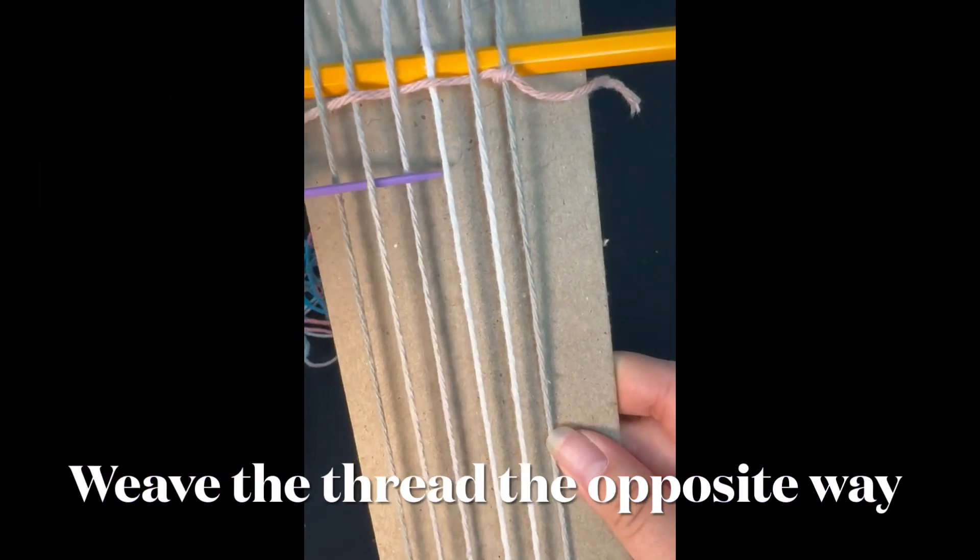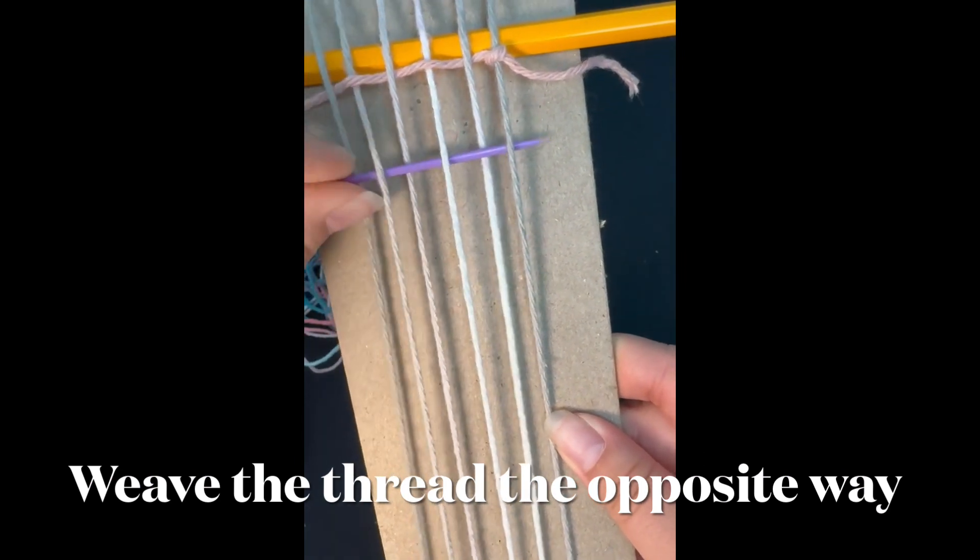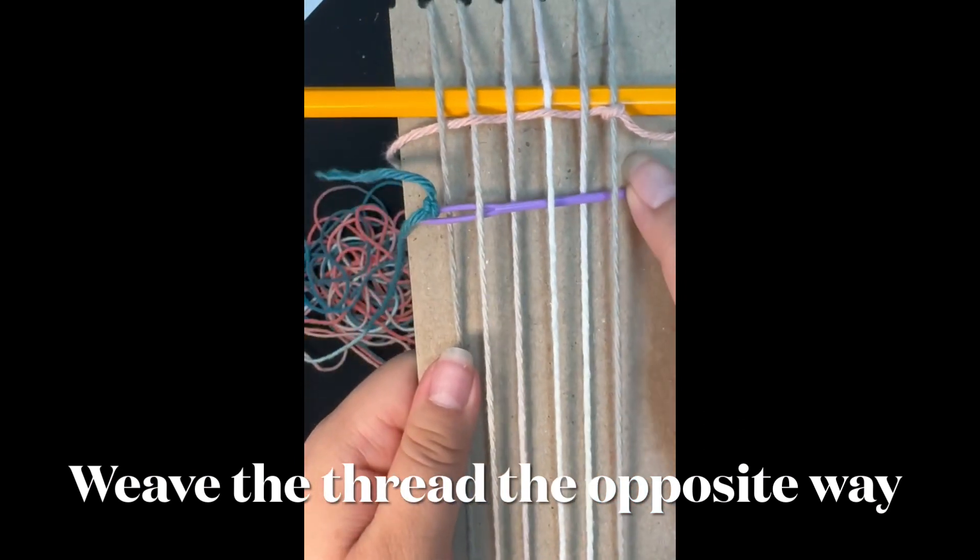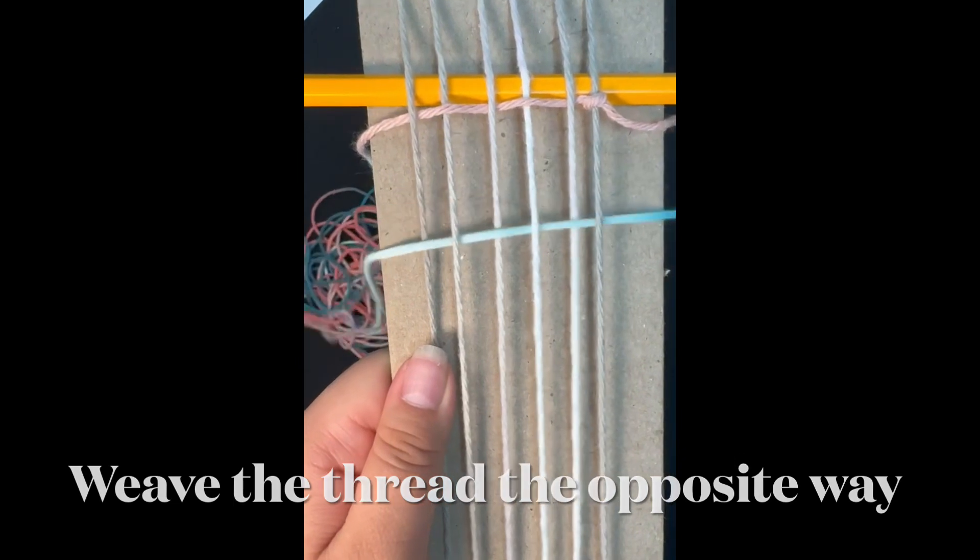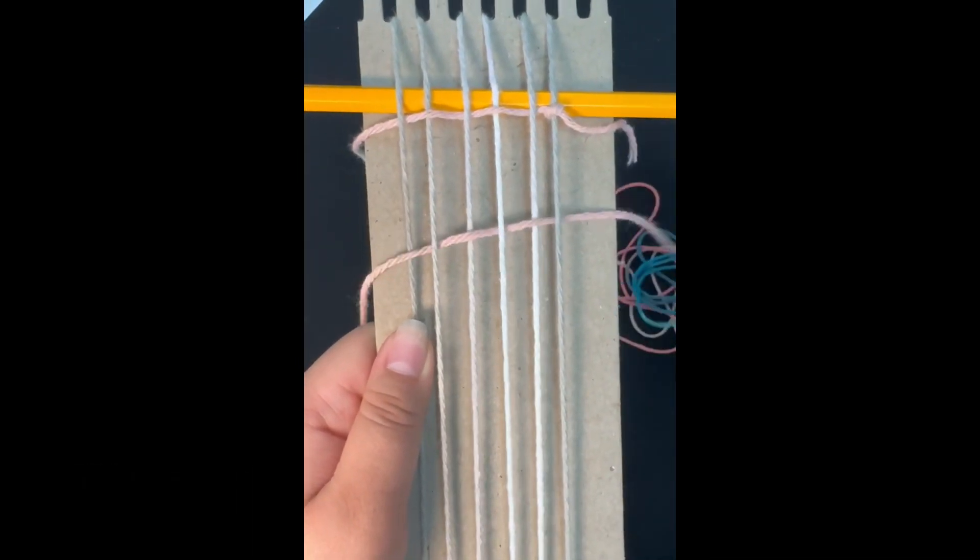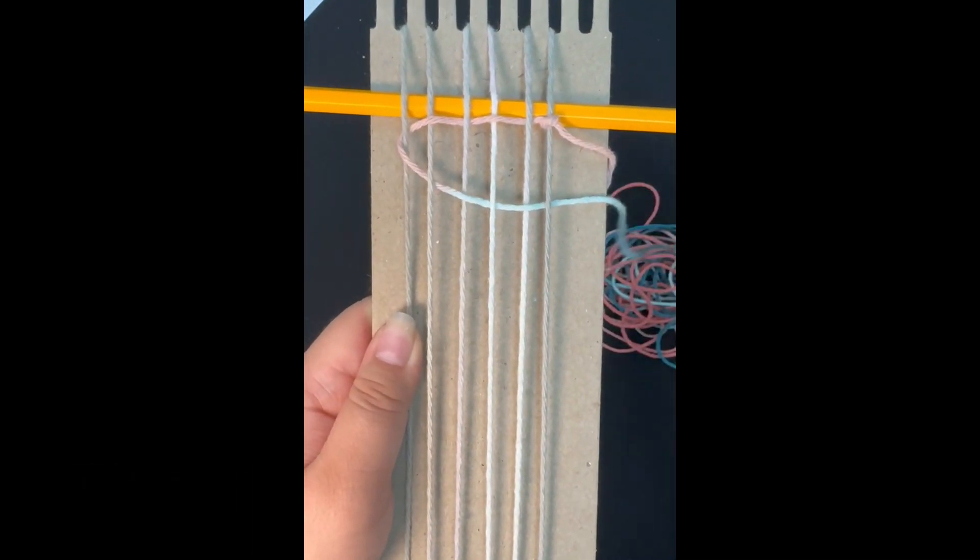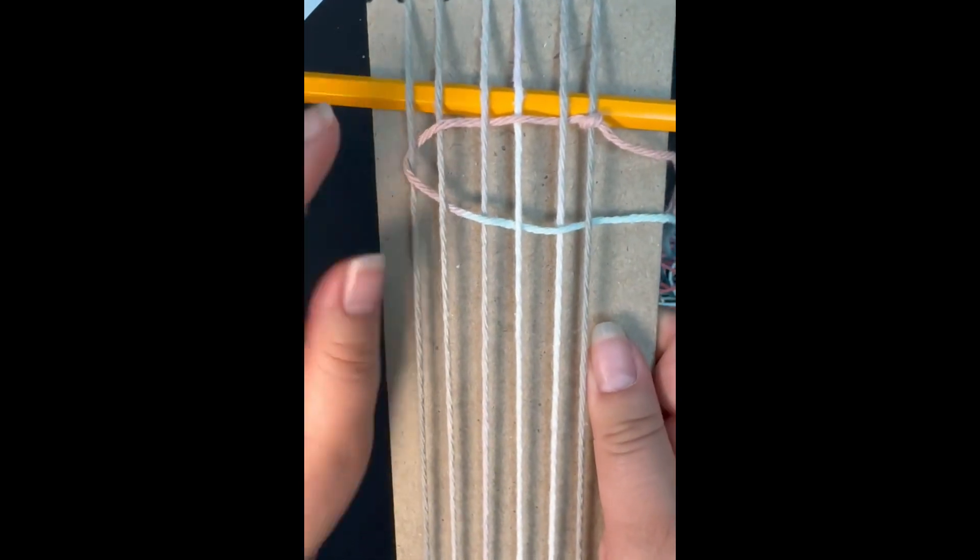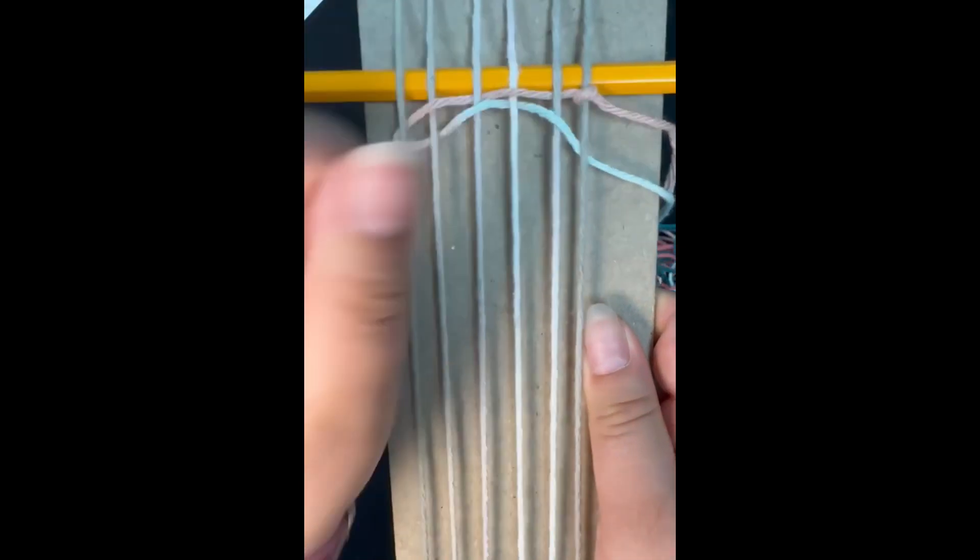After securing the knot, we're going to weave the other way. You'll thread your needle over, under, over, under, over, under again, and pull it all the way through. You'll know that you did this step right if there is a loop that catches on the other side of the loom.